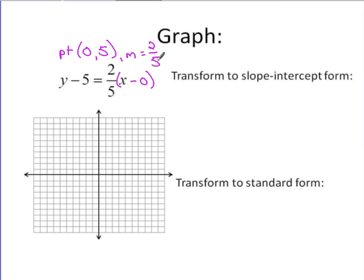Plot your point of zero five. One, two, three, four, five. Utilize your slope of two fifths to get a second point. From this point, go up two, five to the right. One, two, three, four, five. Got your two points. Draw your line.